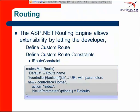The first extensibility point we're going to talk about is the routing engine, which is not specific to ASP.NET MVC. The ASP.NET routing engine allows the developer to extend the execution pipeline by defining custom routes. Custom routes are entries in the route table that define how an incoming request maps to a controller. You can also define custom route constraints that enhance the capability of matching — through rules defined in code — the incoming request to a controller action.